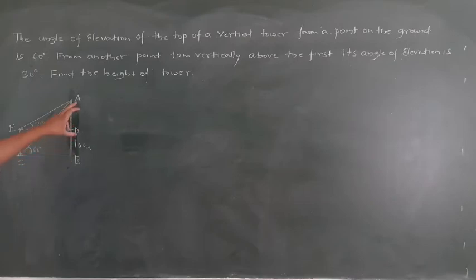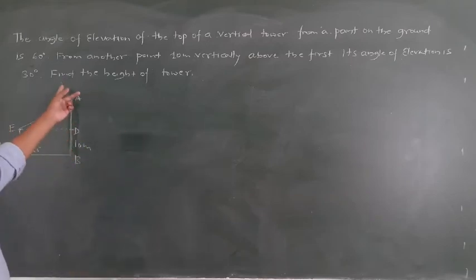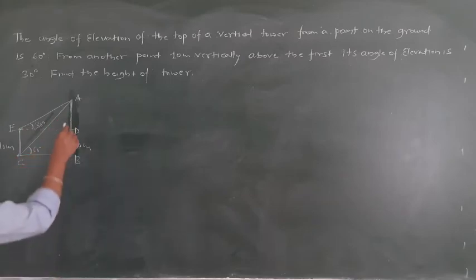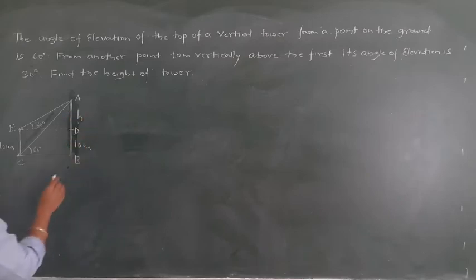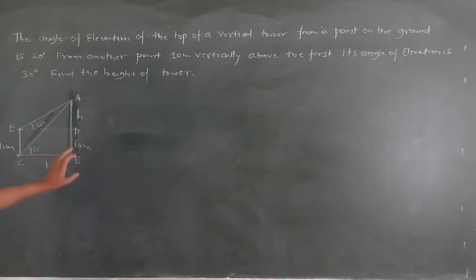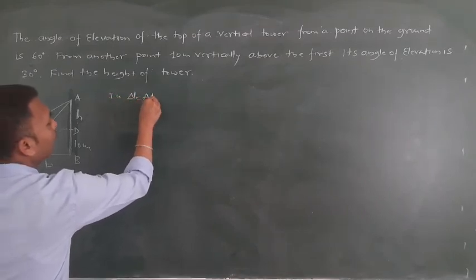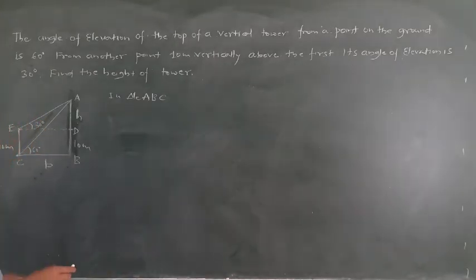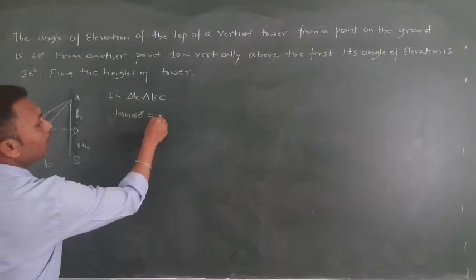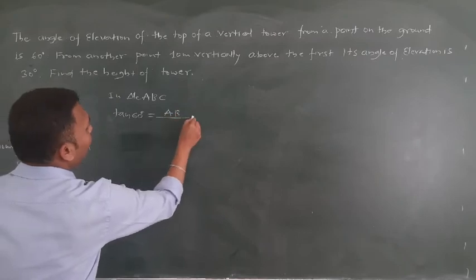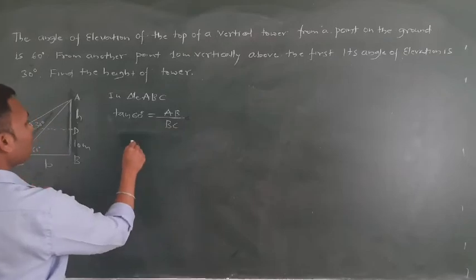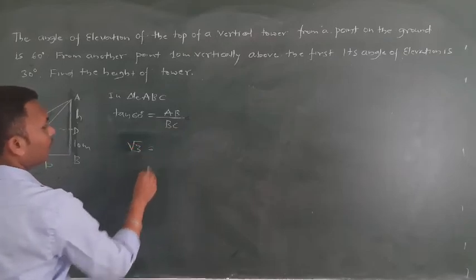We have two triangles: one is ABC and another is ADE. By applying trigonometric ratios we can solve. What we need to find is the height of the tower. Let me take the height as h and the base as b. Now, taking first triangle ABC, we apply the trigonometric ratio: tan of 60 degrees is equal to AB by BC.